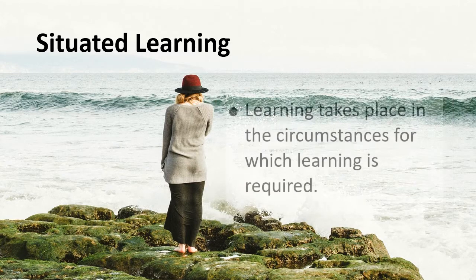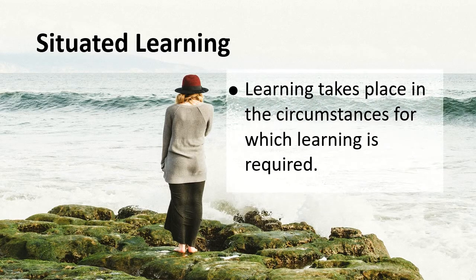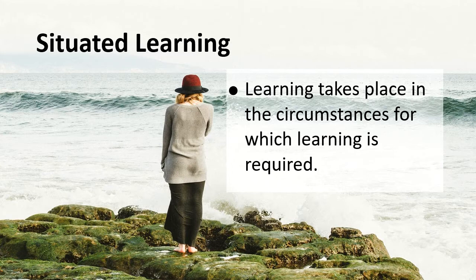Learning takes place in the circumstances for which learning is required. So learning always has a situation. It is the situation which decides whether learning is required or not, and what kind of learning is required. So learning is always associated with the situation — that's why it is called situated learning.